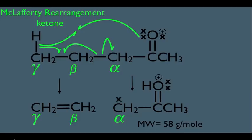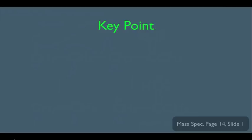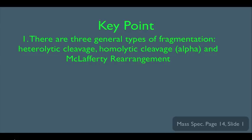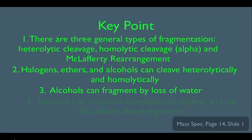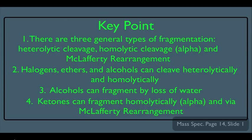So what have we learned here? There are three general types of fragmentation: heterolytic, homolytic (also called alpha cleavage), and McClafferty rearrangement. We also saw that halogens, ethers, and alcohols can cleave heterolytically and homolytically via alpha cleavage. Specifically, alcohols can also fragment by loss of water via gamma cleavage. And ketones can fragment via alpha cleavage and via McClafferty rearrangement. Just as important, we saw how to quickly slice and dice these molecules to generate all possible fragments and make a prediction on what we might observe on a mass spectrum for given molecules.